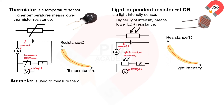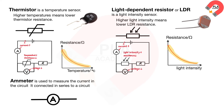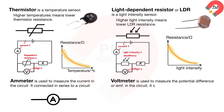An ammeter is used to measure the current in a circuit. It is connected in series with the circuit. This is the symbol of an ammeter. A voltmeter is used to measure the potential difference, or voltage, and electromotive force, or EMF, in a circuit. It is connected in parallel with the circuit. This is the symbol of a voltmeter.